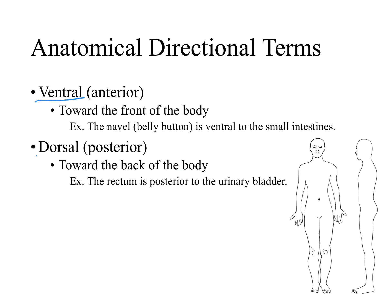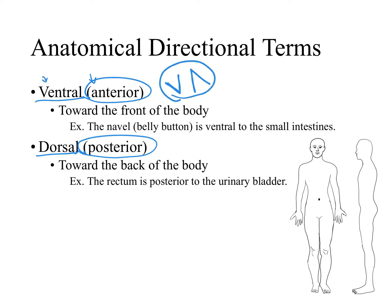Ventral versus dorsal. Another word for ventral is anterior, and another word for dorsal is posterior. One way to remember this is that ventral starts with V and anterior starts with A — they have the same shape. Similarly, D and P have the same shape if you extend the stick on the D. So dorsal is posterior, ventral is anterior.